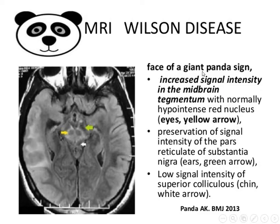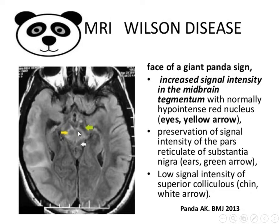The face of the giant panda sign shows increased signal intensity in the midbrain tegmentum, with normally hypointense red nuclei — the red nuclei are not involved, so they appear hypointense. These are the eyes of the panda. Why are the red nuclei hypointense? Even normally they are hypointense because they contain iron — that is why they are called red nuclei. Because they normally contain iron, they appear hypointense on all imaging sequences.